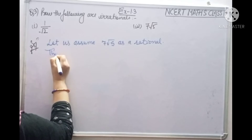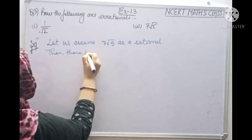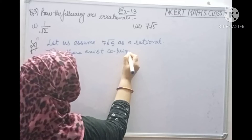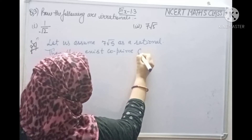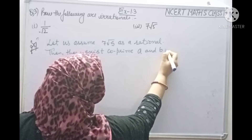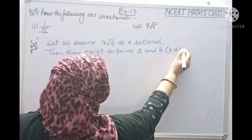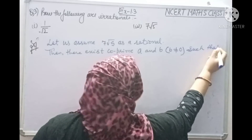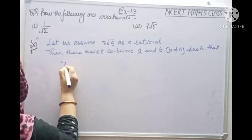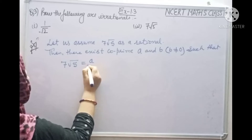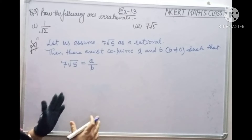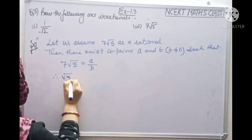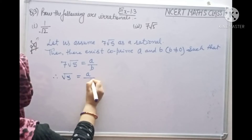Then there exists co-prime A and B, where B is not equal to 0, such that 7 root 5 is equal to A by B. It is in the form of a rational, therefore root 5 is equal to A by 7B.